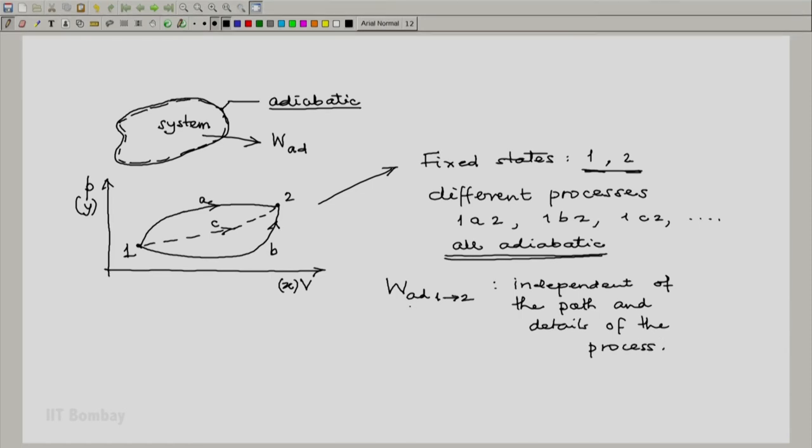This means that if our process is adiabatic and if the initial state and final state are fixed, then the work done does not depend on which path we took. Whether we took 1-a-2 or whether we took 1-b-2 or whether we took 1-c-2.